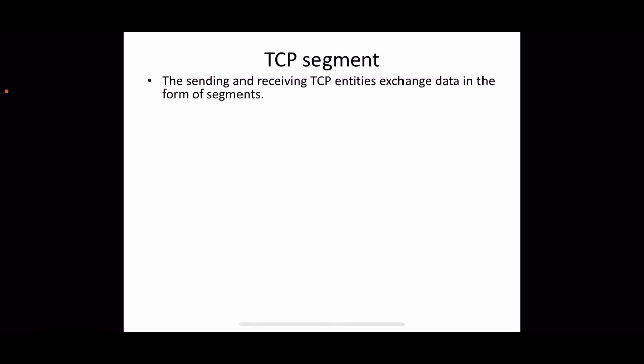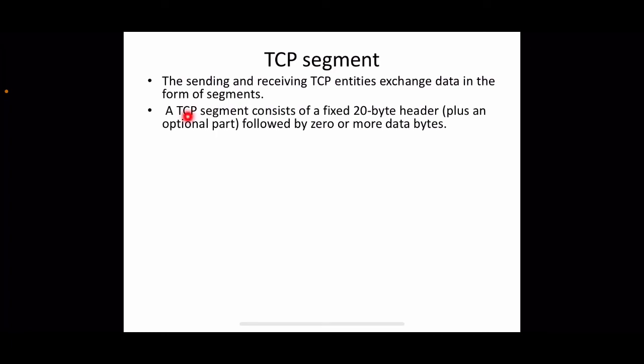The sending and receiving TCP entities exchange data in the form of segments — the name for the data unit at the transport layer (compared to packets at the network layer and frames at the data link layer). A TCP segment consists of a fixed 20-byte header, followed optionally by additional header options, and then zero or more data bytes. The data part is not mandatory — some segments carry only control information or acknowledgements.